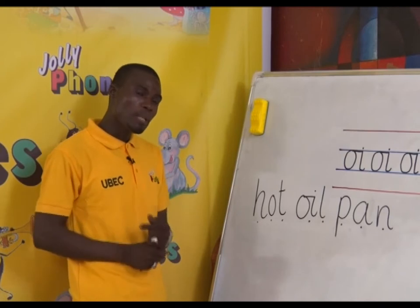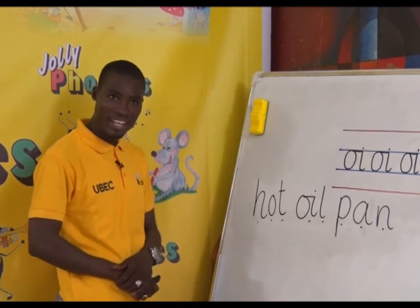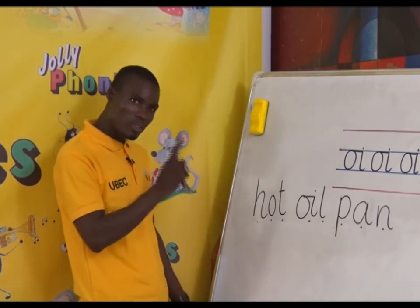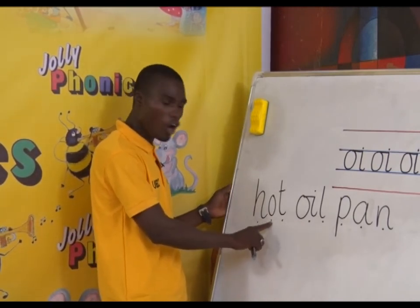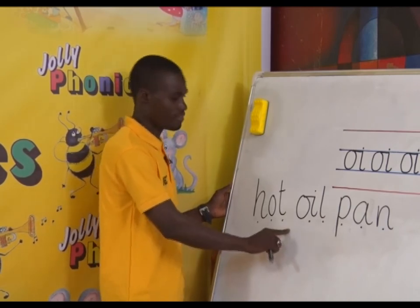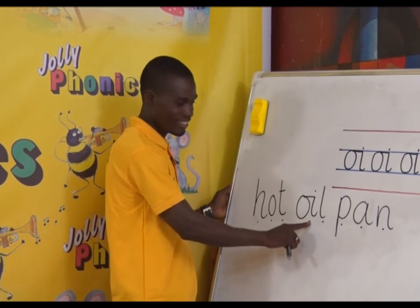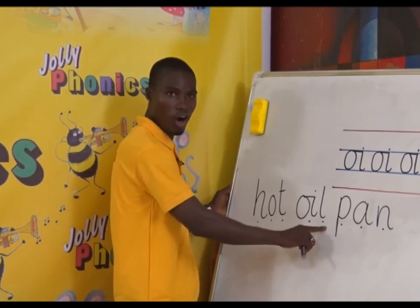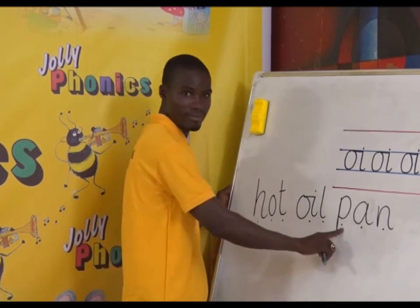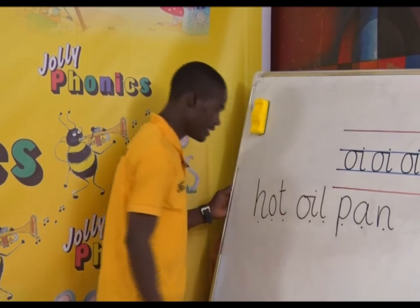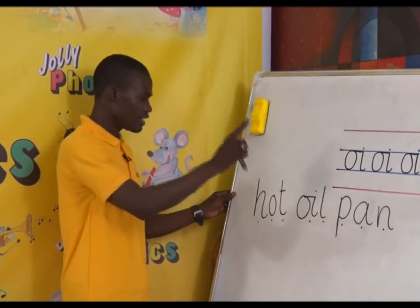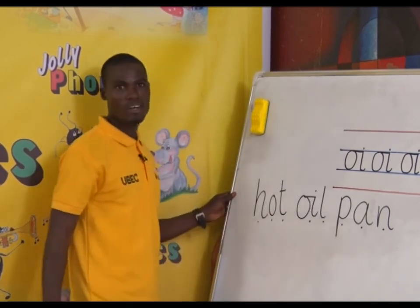So children, let us look at one phrase on the board. I am going to help you read this phrase. When I turn the sound button, you produce the sound. H, O, T — Hot. Hot. Oil. Oil, oil, oil. Pan. Pan. Okay, read all together: Hot, oil, pan. Well done.